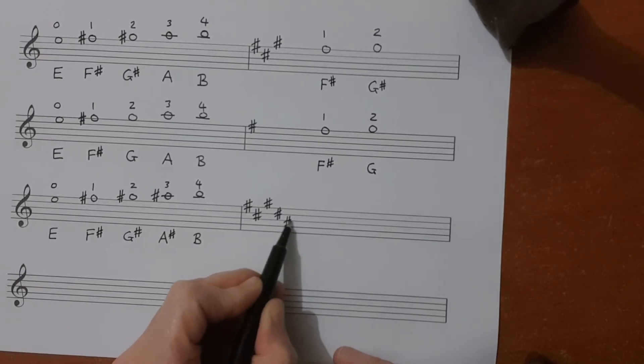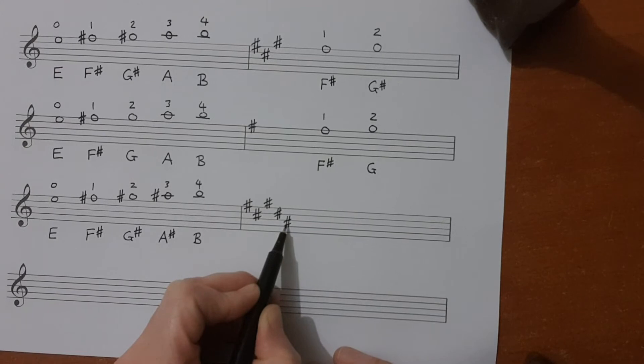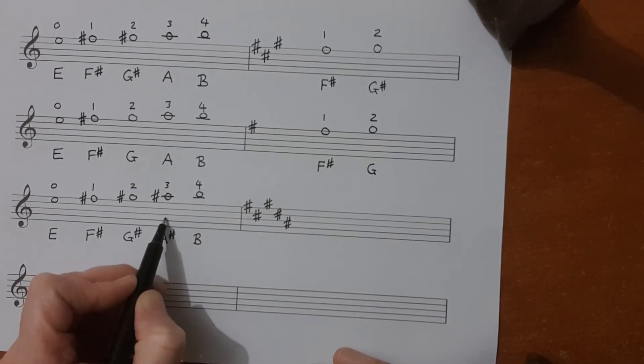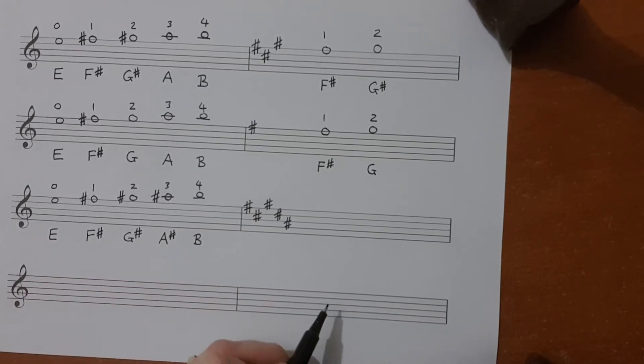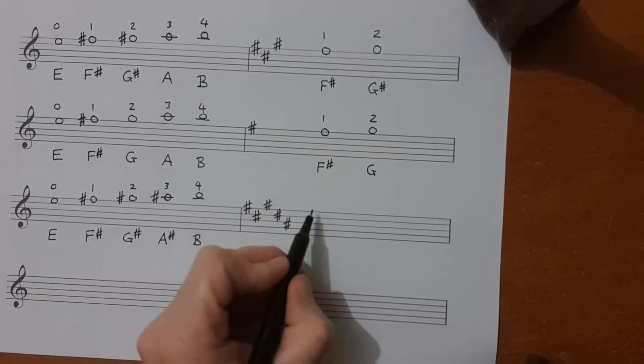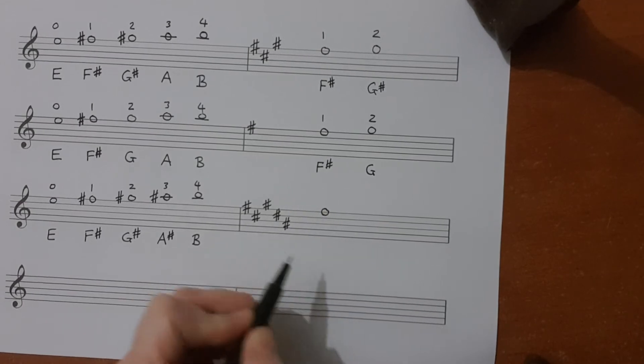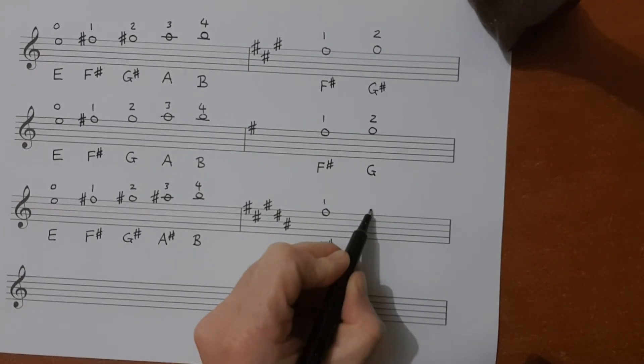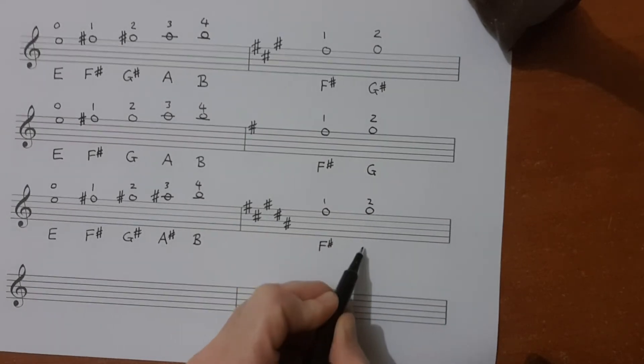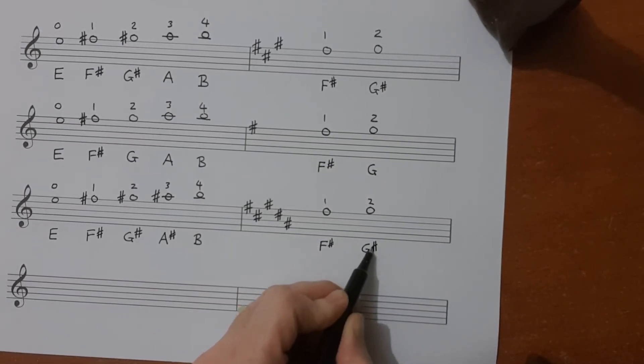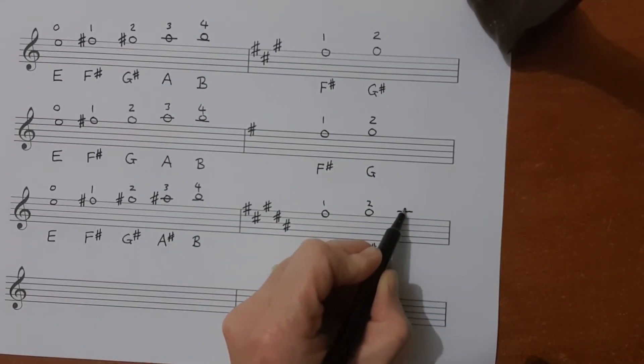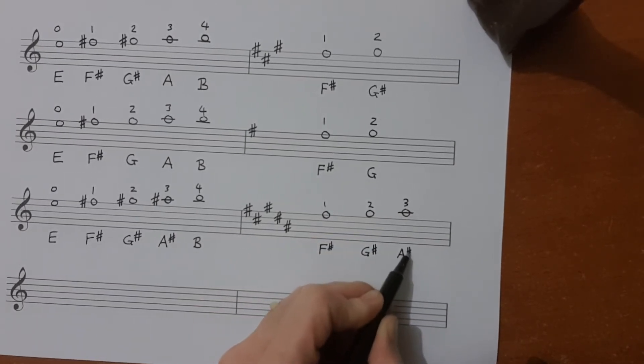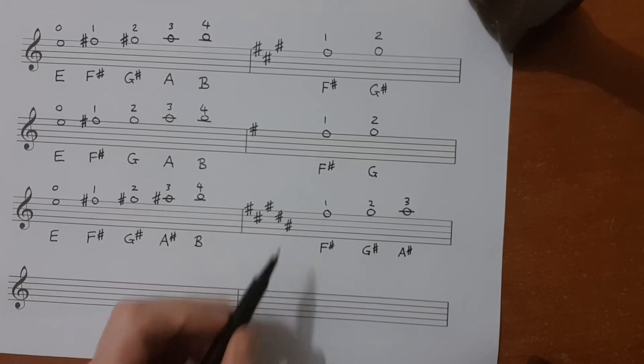So this A sharp is going to apply to all the A's in the piece. It doesn't matter if they're written up here or if they're written in the space where the open A is. Any A in the piece will become an A sharp. So we will still have this note being played as F sharp, we will have this note being played as G sharp, and we will have this note being played as A sharp because of the sharps in the key signature.